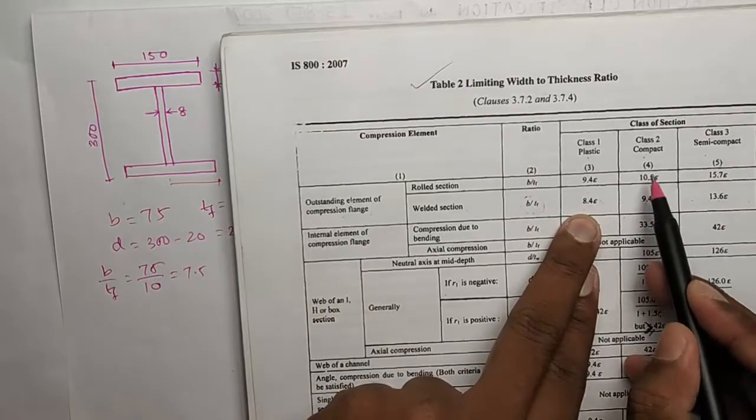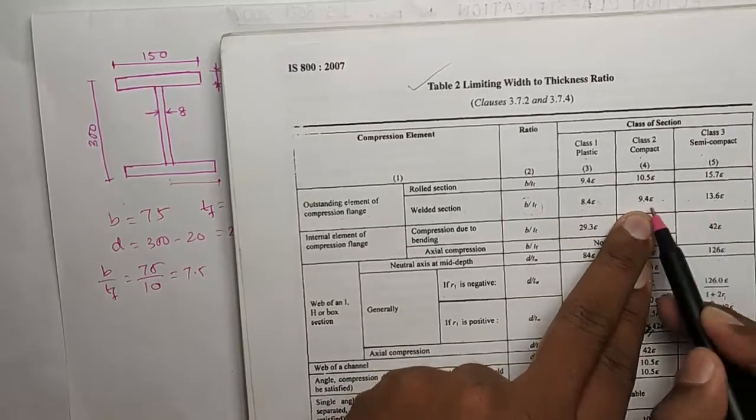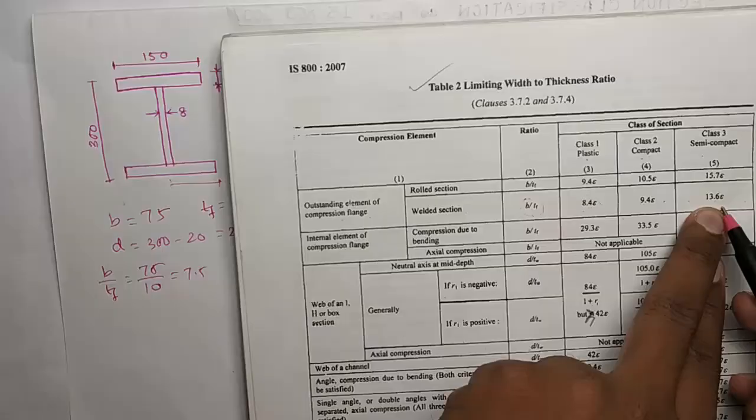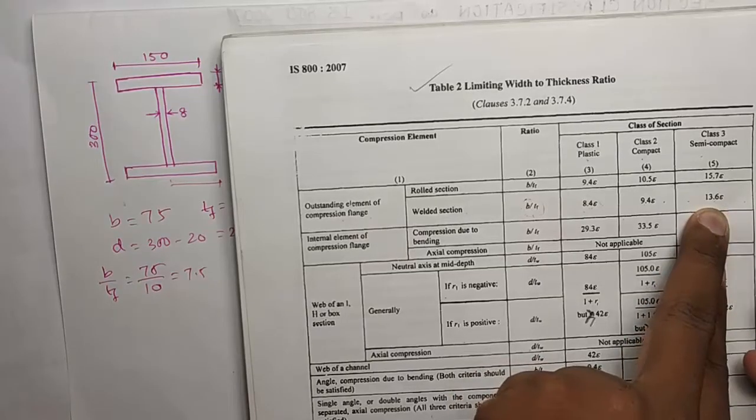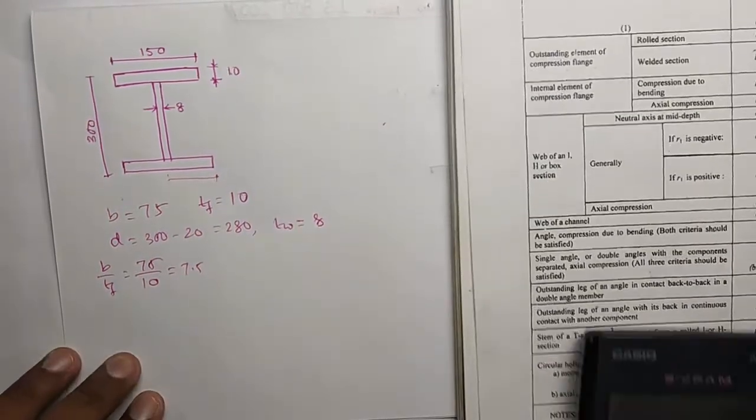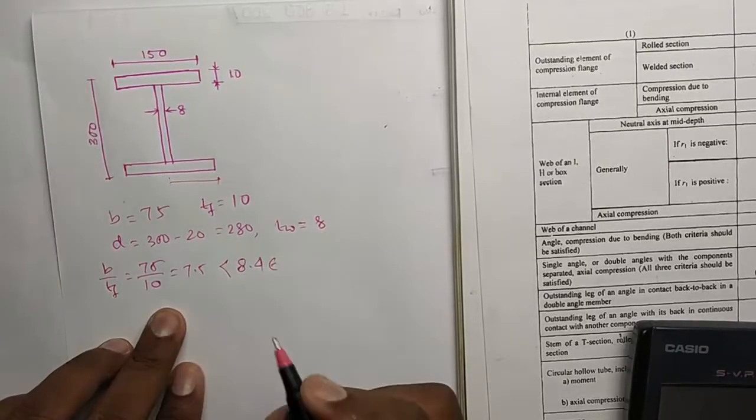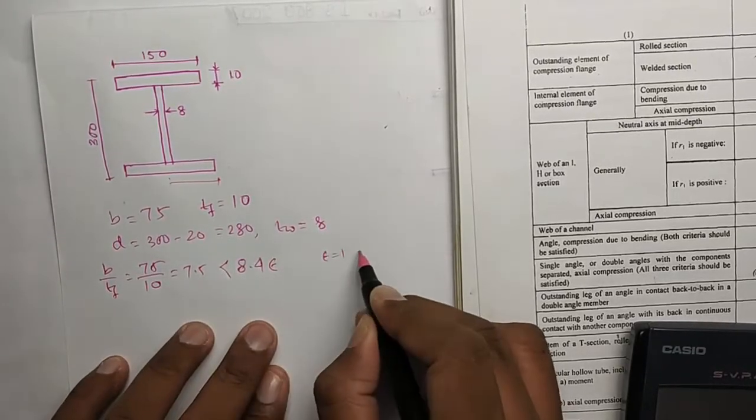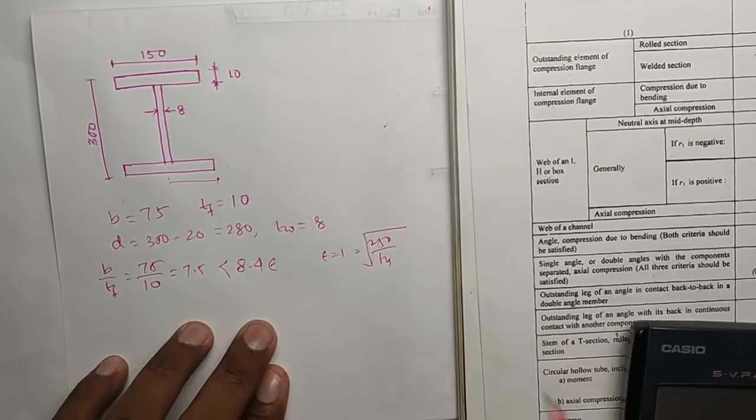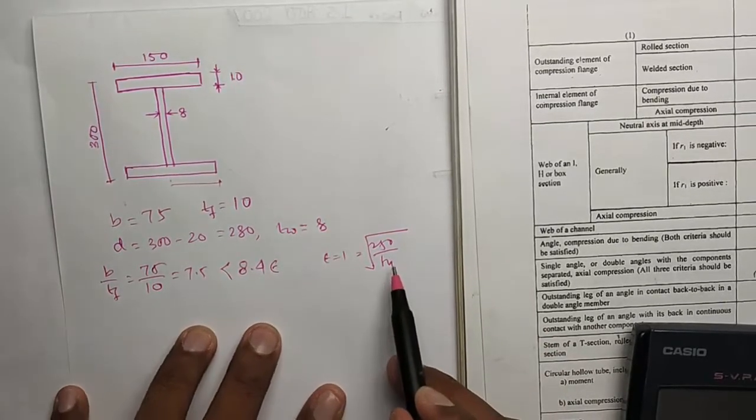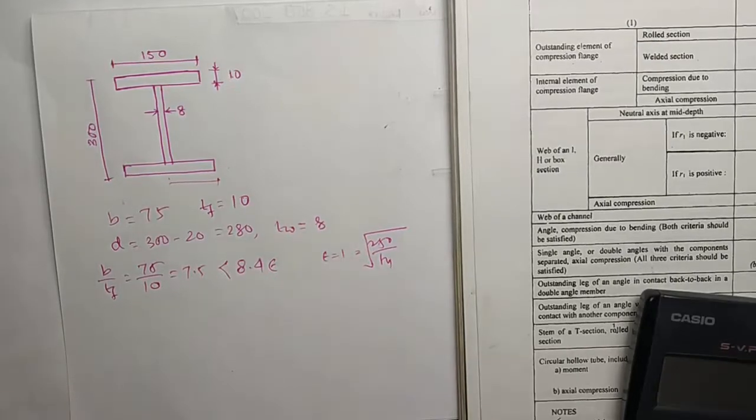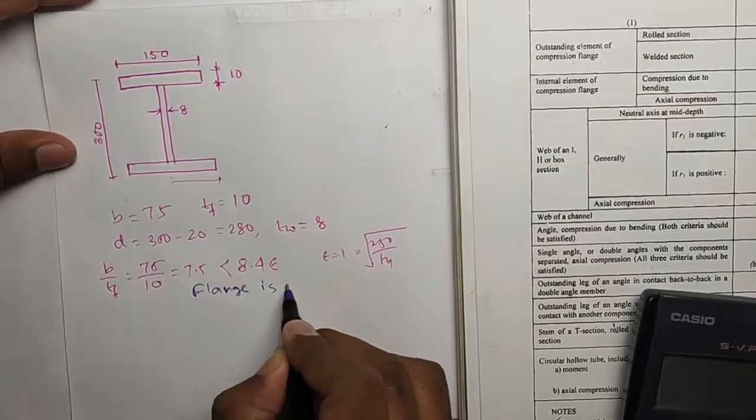If it lies in between this, then compact. If lies in between this, then semi-compact. And if it is above the value in this column, it will be slender. So in our case, 7.5 is less than 8.4 epsilon. The value of epsilon is 1, as this 250 by FY root, per mild steel FY is 250, so epsilon is 1. So we can write the flange is plastic.